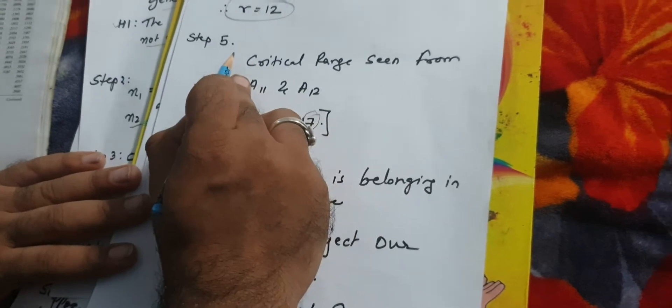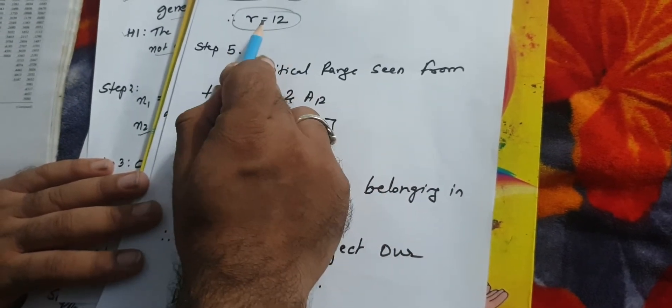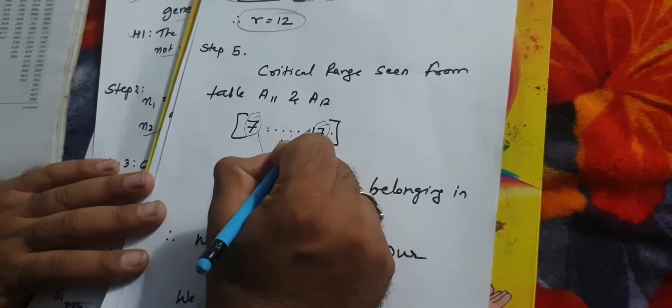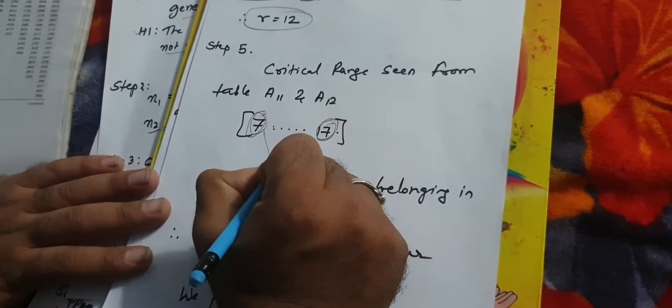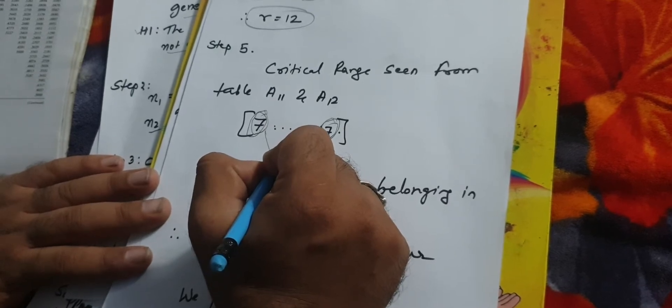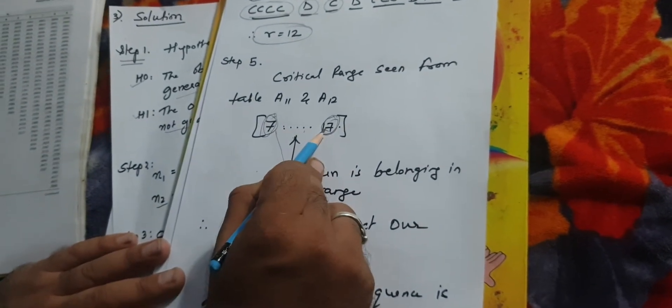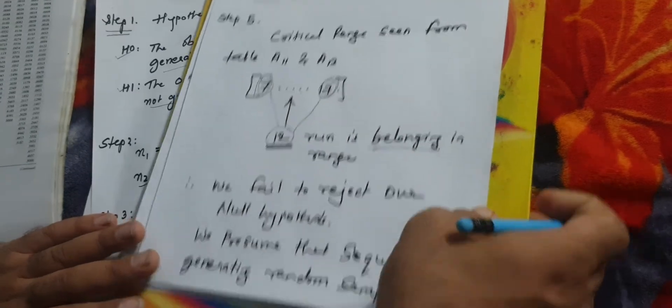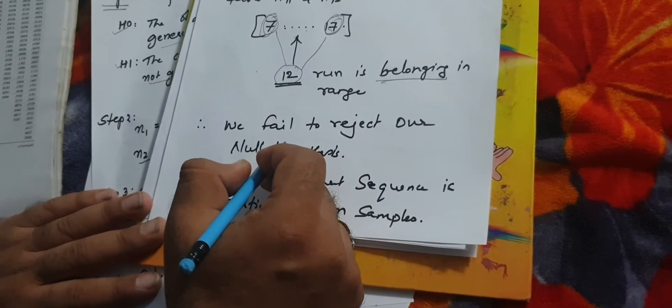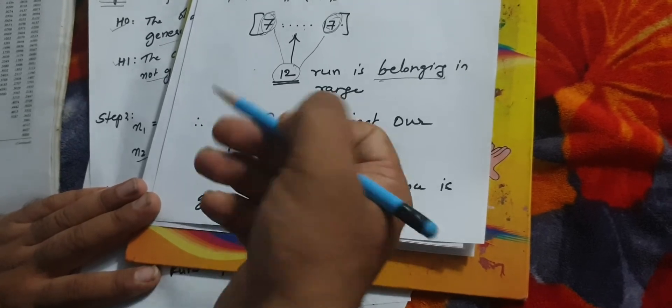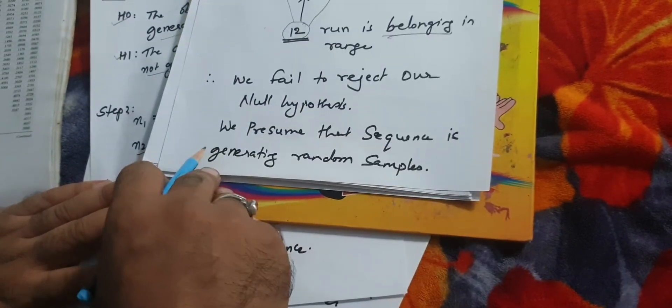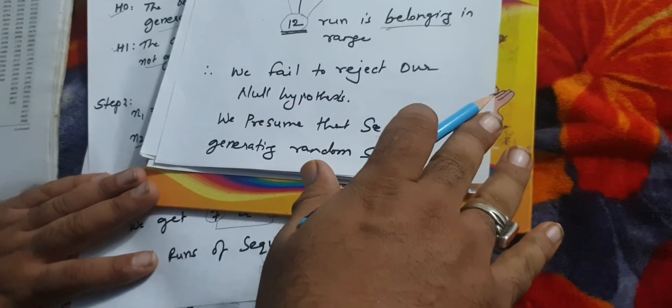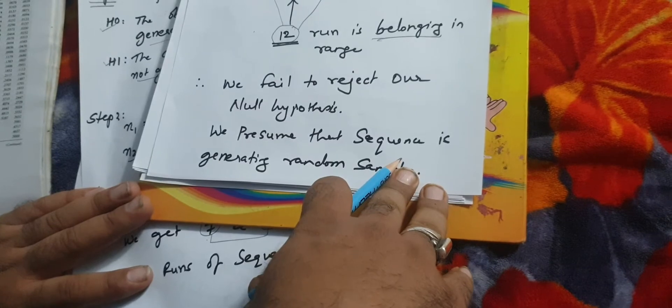Step 5 is very simple. We need to see whether our R, that is runs, are in the range of the values from the tables. Table A11 gave me 7 and table A12 gave me 17. My R is 12 which is lying between both. That's why my null hypothesis fails to reject. The sequence or pattern which has derived is randomly occurred, and the sample represents randomness.